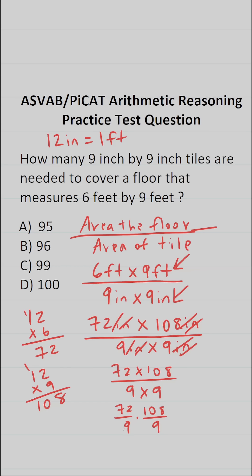72 divided by nine is going to be eight. So this becomes eight times 108 divided by nine is 12. So all we have to do is figure out what eight by 12 is.